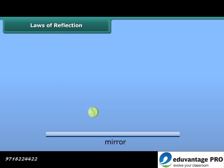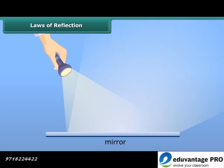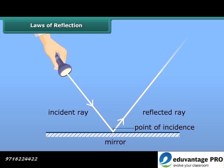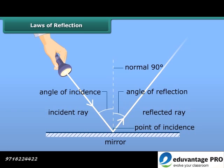Just as a ball bounces off a wall when we hit it, similarly, light bounces off objects when it strikes them. The most important fact is that the angle at which the light strikes an object is the same as the angle at which it gets reflected. Let us study about it in detail.